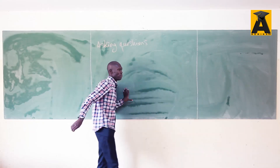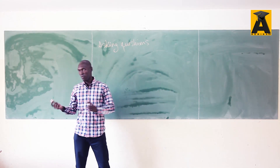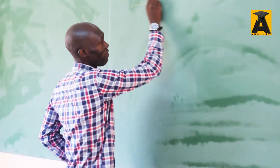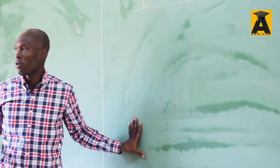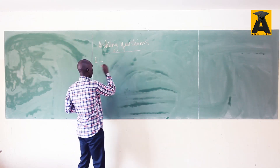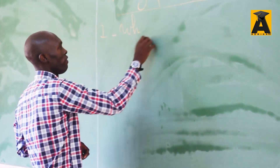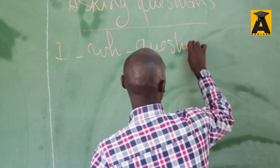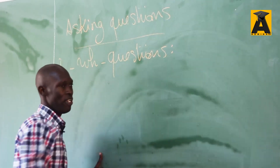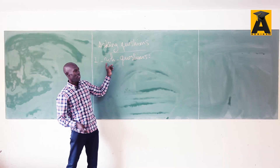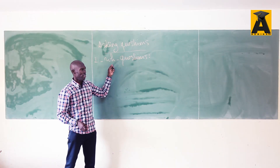So as you know we have two kinds of questions: yes or no questions, and asking questions with a question word. But today I'm just trying to focus on asking questions using question words. Number one here we have WH questions — meaning questions that start with a question word beginning with WH plus something.